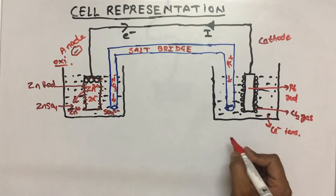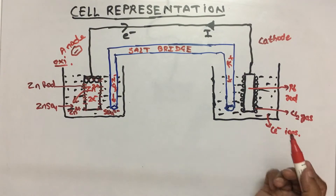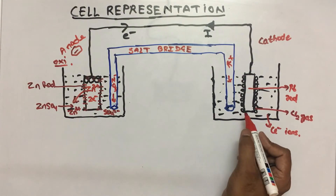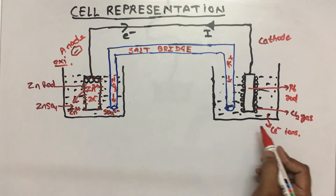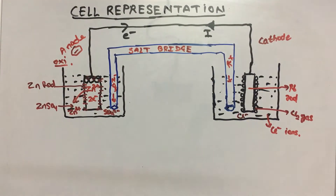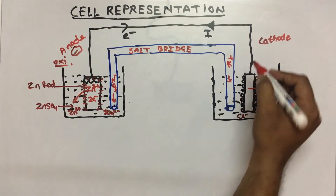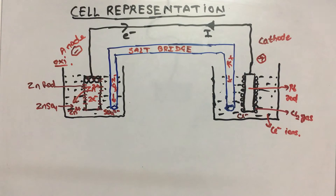Now, at the cathode there is chlorine gas. Since cathode is reduction, chlorine gas will gain electrons, and it becomes Cl negative ion. Because chlorine gas gains electrons, it becomes positive with respect to the solution. This is the reason that the cathode's sign is positive.